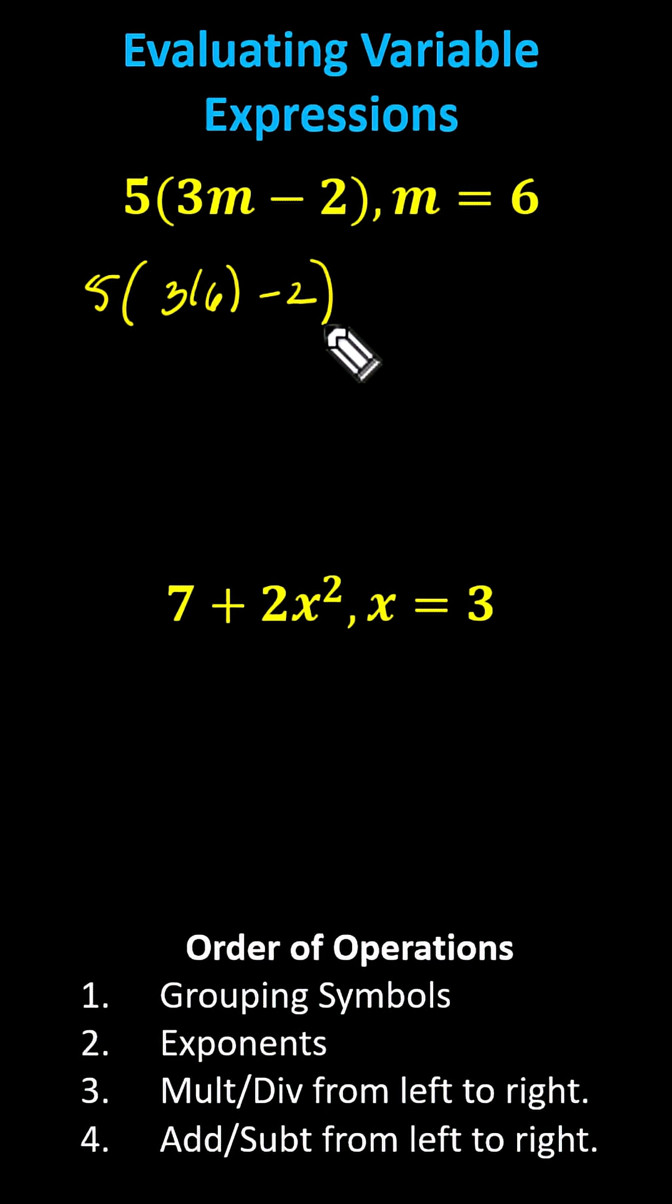The next step is three times six, which is 18, giving us five times the difference of 18 and two. Still simplifying inside the parentheses, 18 minus two is 16. The expression simplifies to five times 16, which is equal to 80.